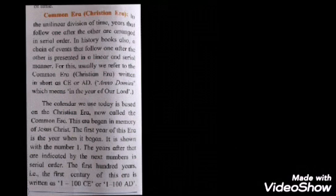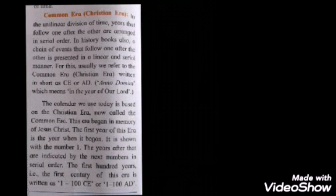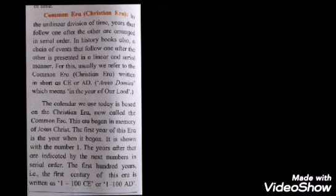In the unilinear division of time, years follow one after the other in serial order. In history books, a chain of events is also presented in a linear and serial manner. For this we refer to the Common Era, or Christian Era, written in short as CE. CE stands for Common Era, or AD — Anno Domini — which means 'in the year of our Lord.' The calendar we use today is based on the Christian Era.